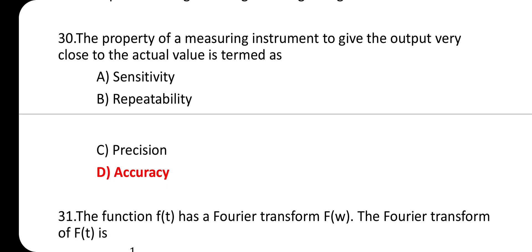Question 30: The property of a measuring instrument to give output very close to the actual value is termed accuracy. It is the closeness with which an instrument reading approaches the true value of the quantity being measured. It means conformity to truth.